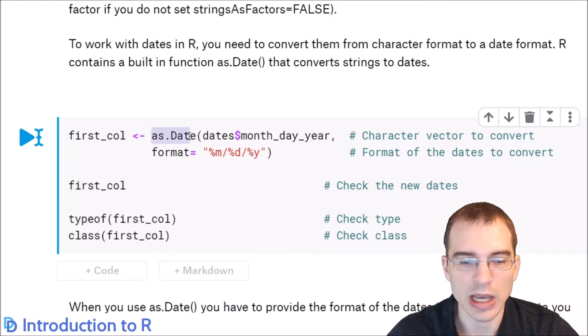We'll take that first column and resave it as a date instead of a character using as.Date. We're passing in the first column, which was called month, day, year. Then you have to specify the format of the date using a special string. So you say format equals, and then specify the format. In this case, it's month, slash, day, slash, year.